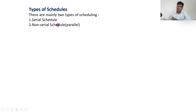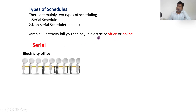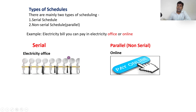Schedules are divided into two types: serial schedule and non-serial schedule. Non-serial means parallel. For example, paying an electricity bill: if you go to the office, you stand in a queue and one person pays, then another — until one transaction completes, the other cannot occur. That's serial. But if you are paying online — using PhonePe or something — multiple people pay at the same time. Here the transactions are happening concurrently.